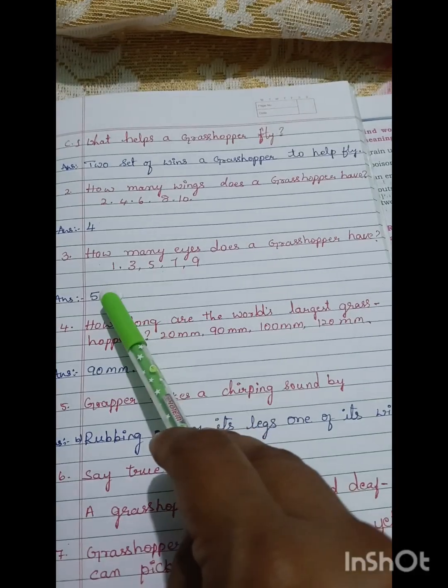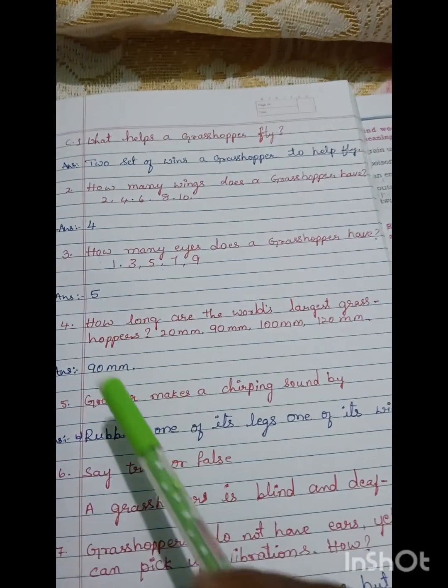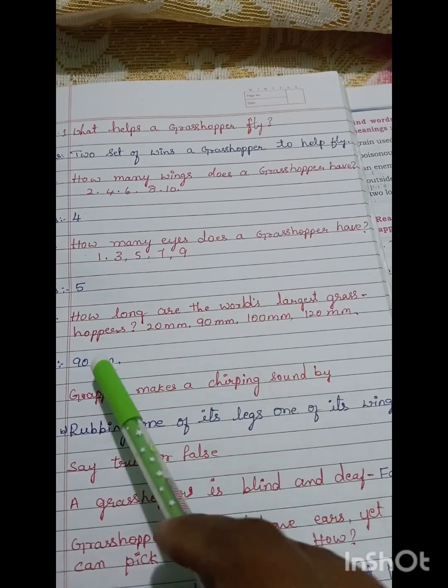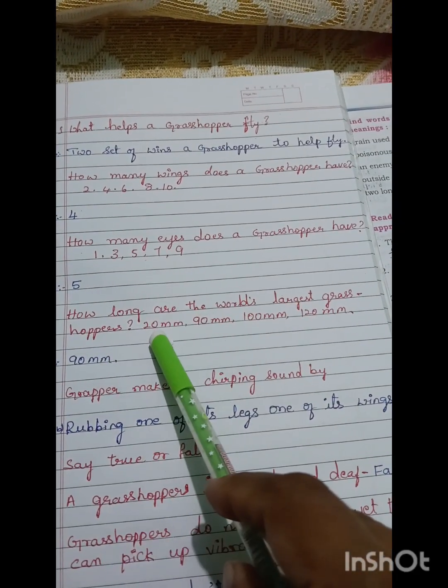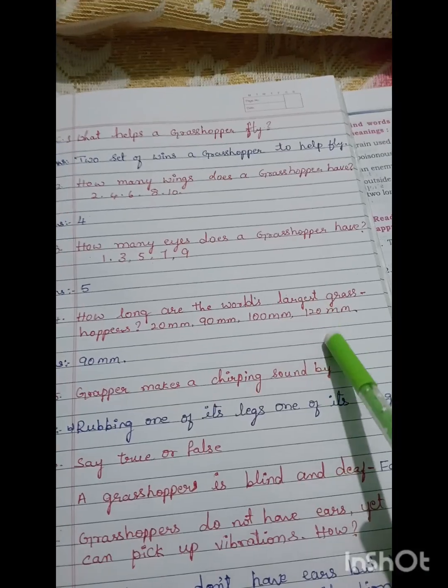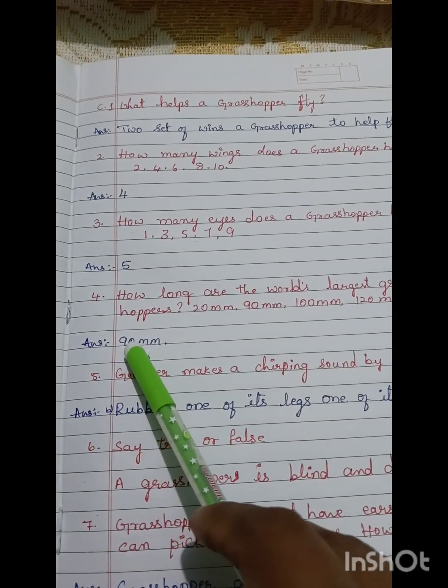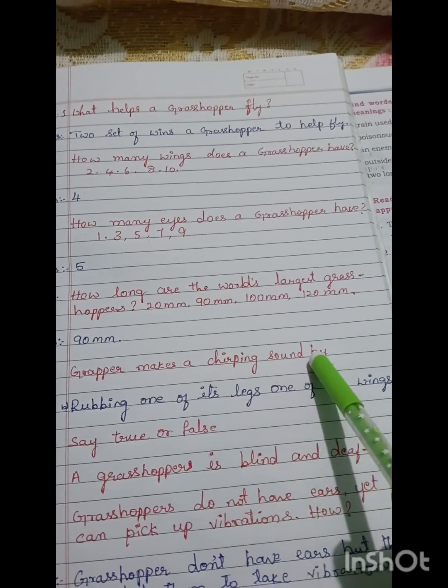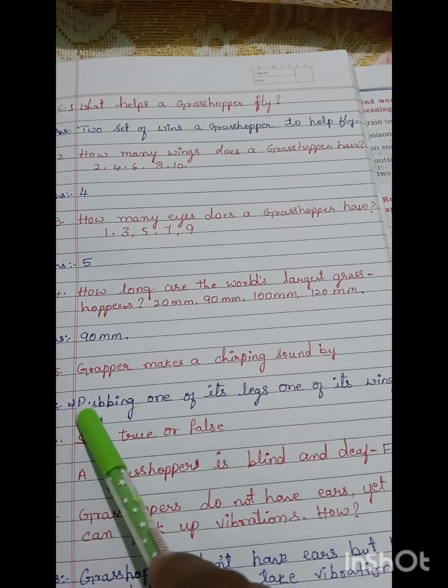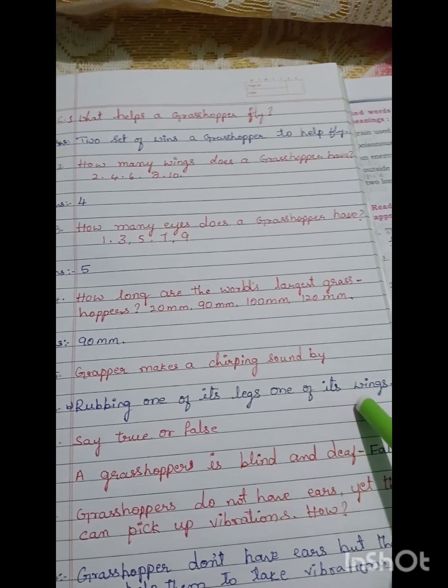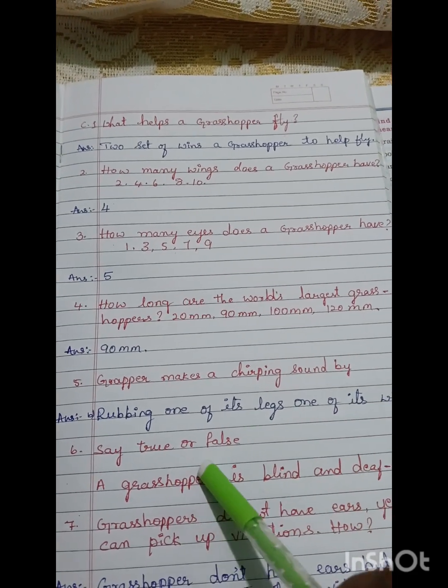How long are the world's largest grasshopper? 20mm, 90mm, 100mm, 120mm - it is 90mm. Grasshoppers make a chirping sound by rubbing one of its legs, one of its wings.